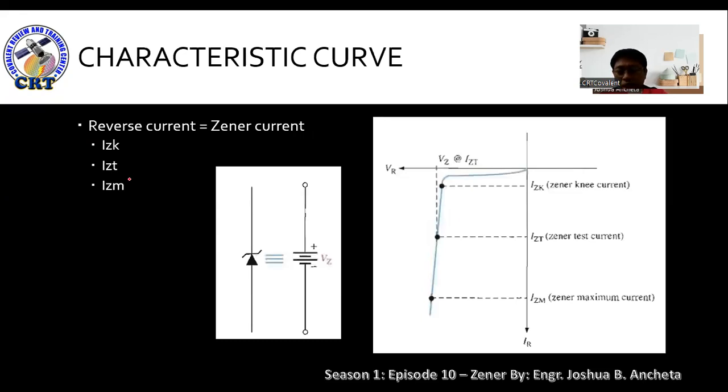The main focus is the reverse breakdown region. We magnify the reverse breakdown region. There is what we call reverse current, which is the Zener current. We break down the Zener current into three types: IZK, IZT, and IZM. IZK is the Zener knee current, the minimum Zener current, and the point of transition from low current to high current.